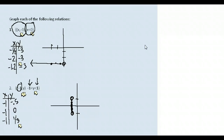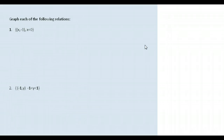So there are a couple of examples of graphing relations. If you're ever given an equation, you can always select values for X and plug them in to find your Y value. Pay careful attention to restrictions they might give you, like X having to be less than zero or Y having to be between negative one and one. Let's graph a few more.